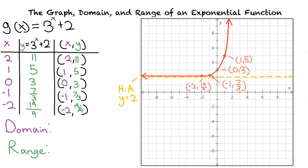With this graph, we can find the domain and range of our original function. Our domain is still negative infinity to infinity, since the graph still continues in both directions of the x-axis. For our range, as the x values get smaller our y values now get closer and closer to 2, but they do not reach 2. This means that our range is 2 to infinity, not including 2.